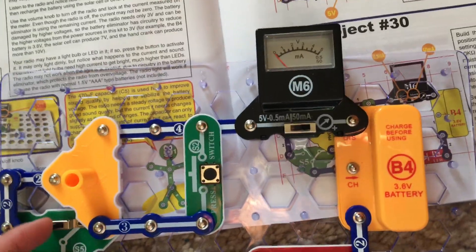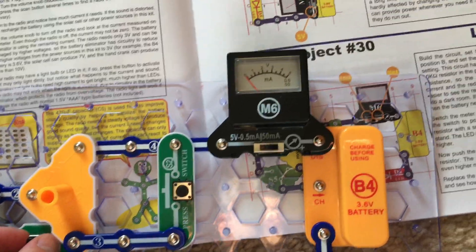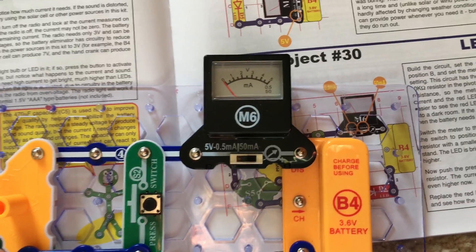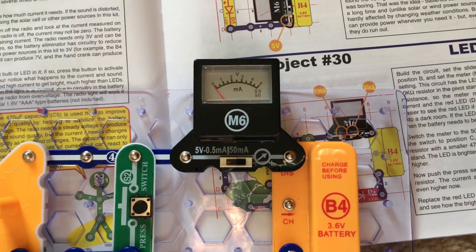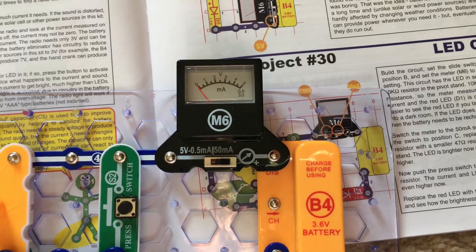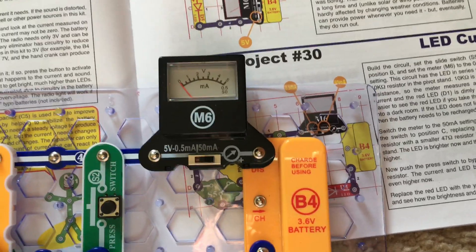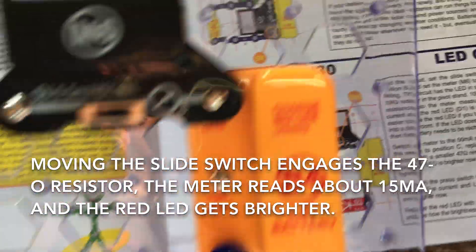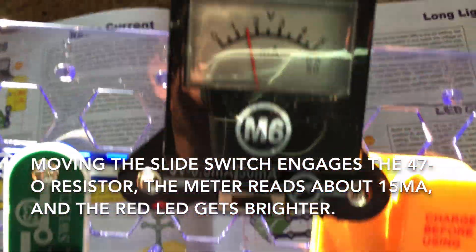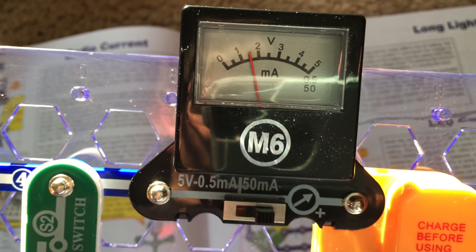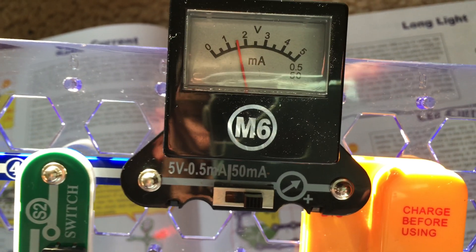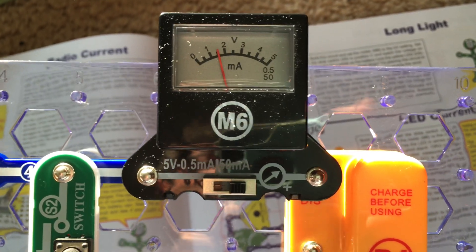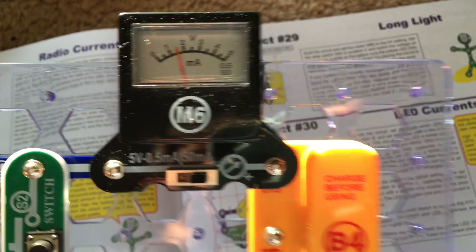I'm going to now move the slide switch to the C position, bypassing the 10,000 ohm resistor and allowing the smaller one at 47 ohms to kick in. Now the LED becomes brighter and the meter now reads about 15 milliamps compared to 0.2 milliamps earlier.